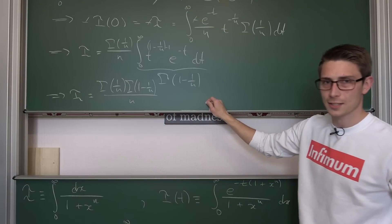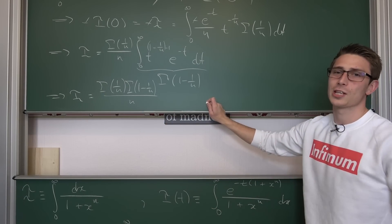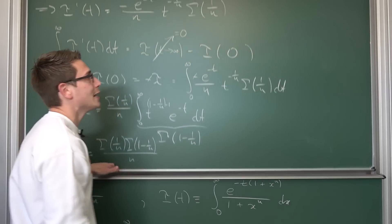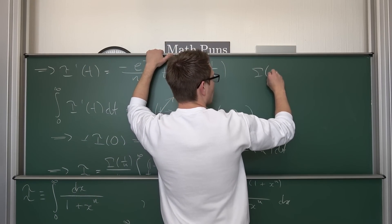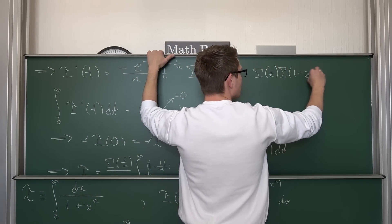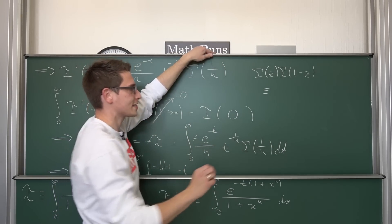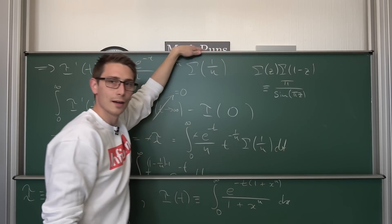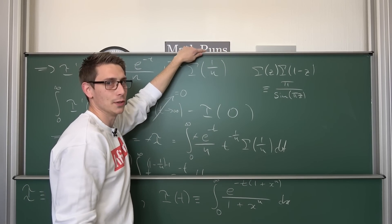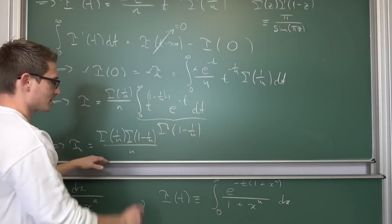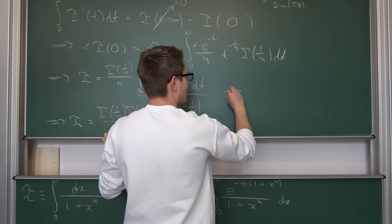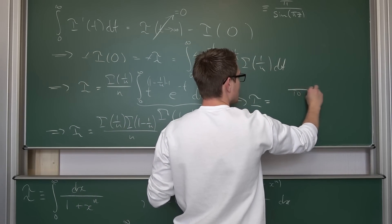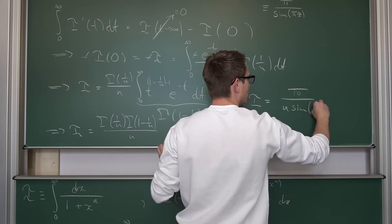We're not done yet — this is a final answer, but we can do even better using Euler's reflection formula. It's such a powerful theorem in analytic number theory. Euler's reflection formula states that gamma of z times gamma of 1 minus z equals pi divided by the sine of pi times z. Pi and the sine of pi pop up, which is really cool. In our case, z is obviously 1 over n, leaving us with a final solution of I equal to pi divided by n times the sine of pi over n.